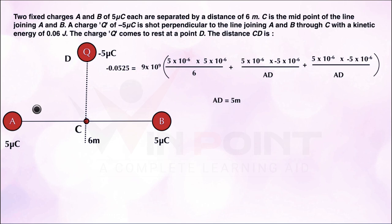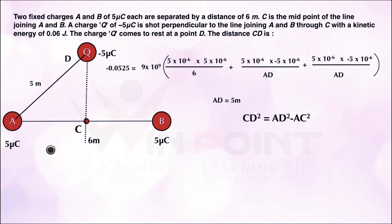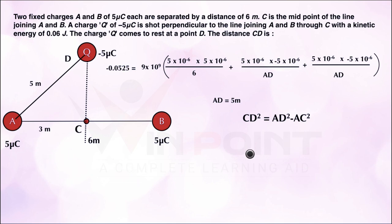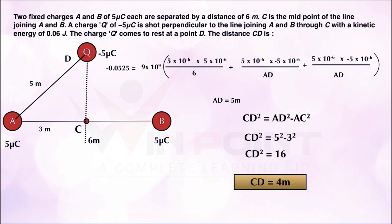So we got the distance AD equal to 5 meters. The distance AC is 3 meters. Now applying the Pythagorean theorem: CD² = AD² − AC² = 5² − 3² = 25 − 16 = 16. Therefore CD equals 4 meters. So the distance from the midpoint C to the point D is 4 meters.